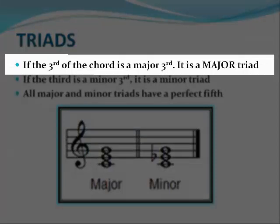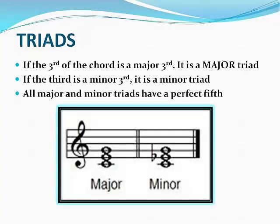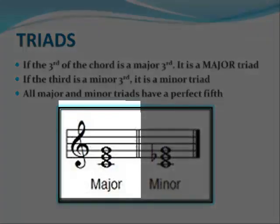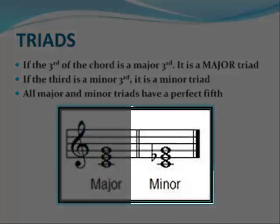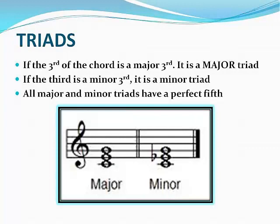A major triad has the interval of a major third from the root to the third of the chord, and then the interval of a perfect fifth from the root to the fifth of the chord. The example you're looking at is the C major triad. We have a major third from C to E, which is the root and the third of the triad, and a perfect fifth from C to G. The C minor triad has a minor third from C to E-flat and also has a perfect fifth from C to G.